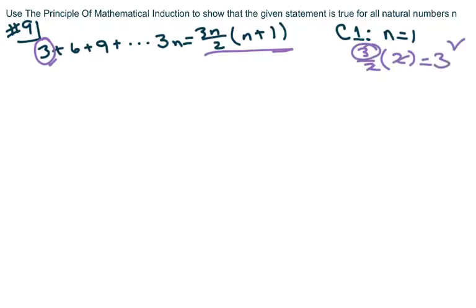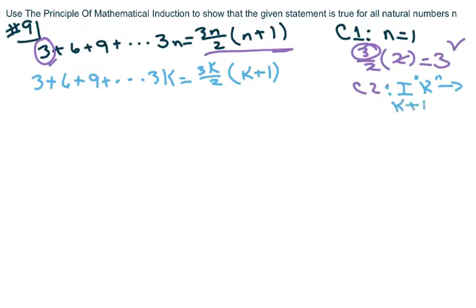It should always check. And now for condition 2, if it's true for some k, so I'm going to write this for some k. It means every time there's n, I'm going to substitute it with a k. If it's true for k, then it should be true for the next term, which is k plus 1.